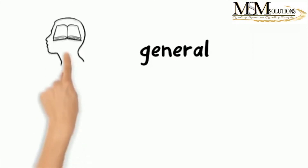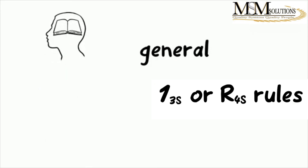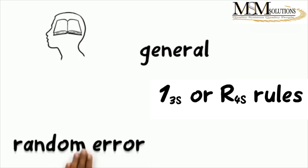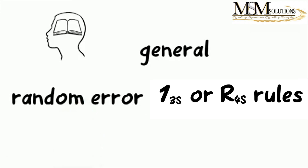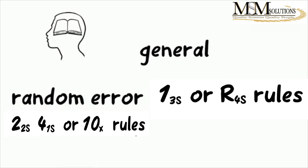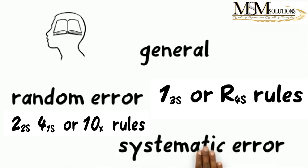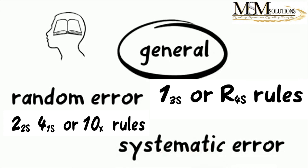There is a general understanding of what these rules can indicate. Usually, a 1-3S or an R-4S rule violation indicates a random error, whereas a 2-2S, a 4-1S, or a 10x rule violation most likely indicates a systematic error. This general consensus helps you apply the correct corrective action, knowing exactly what type of error you're dealing with.